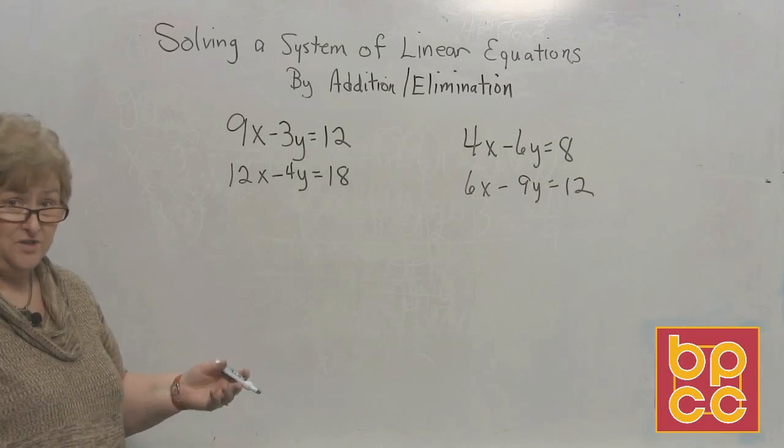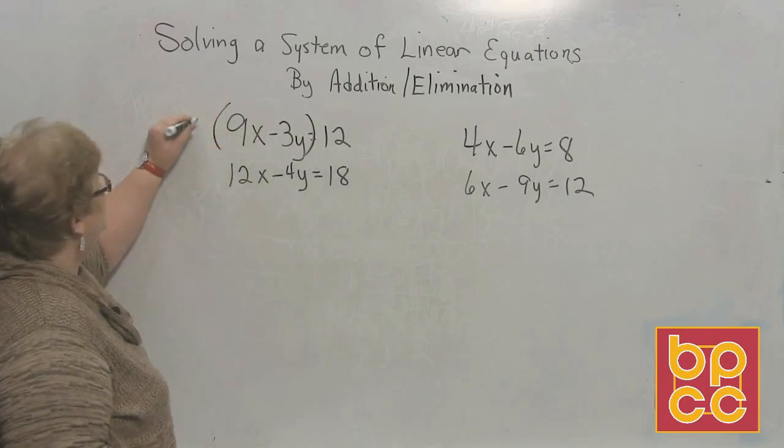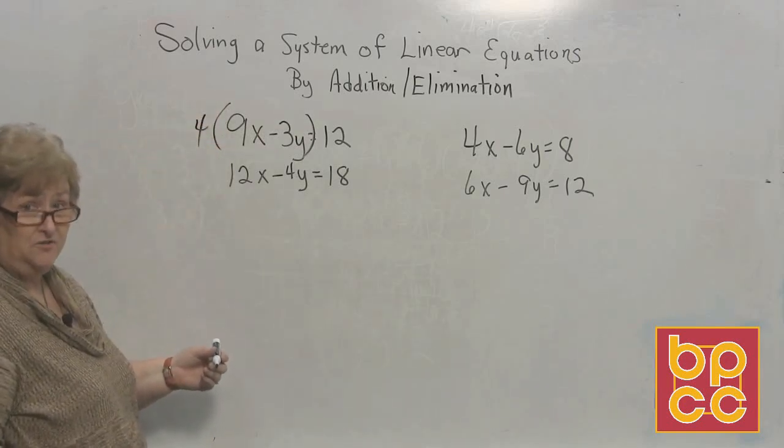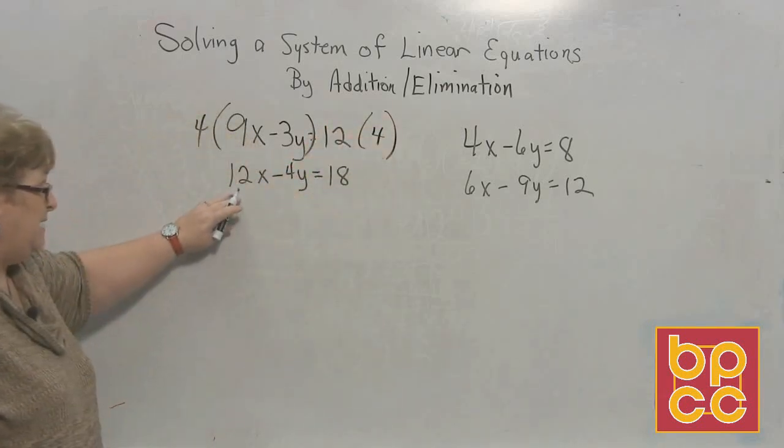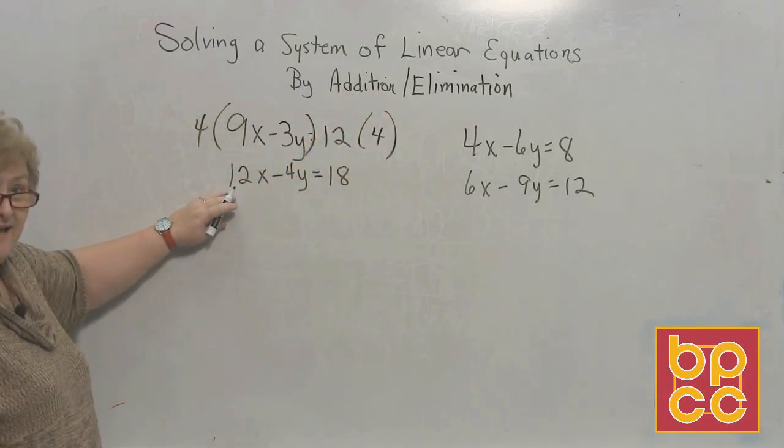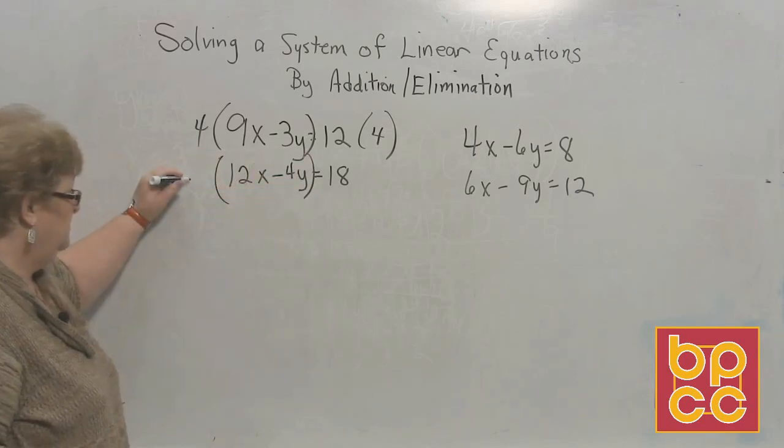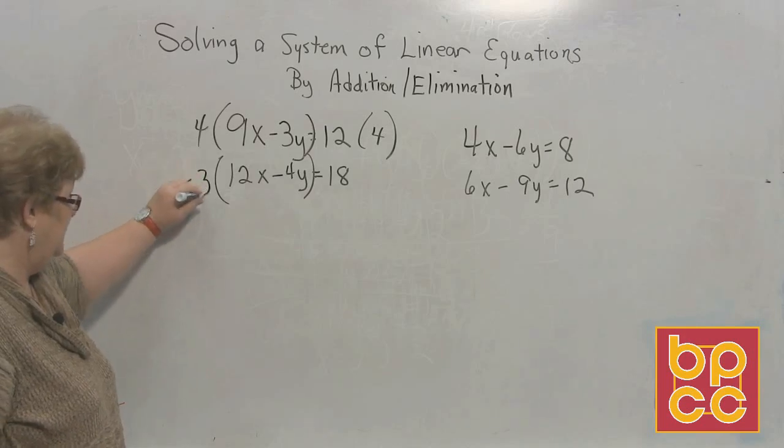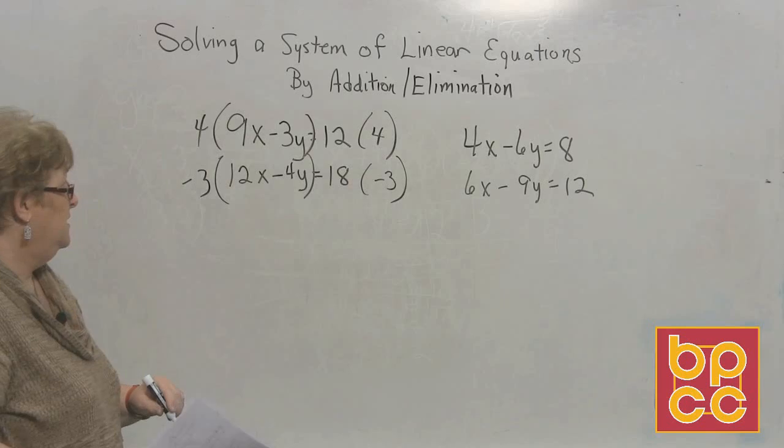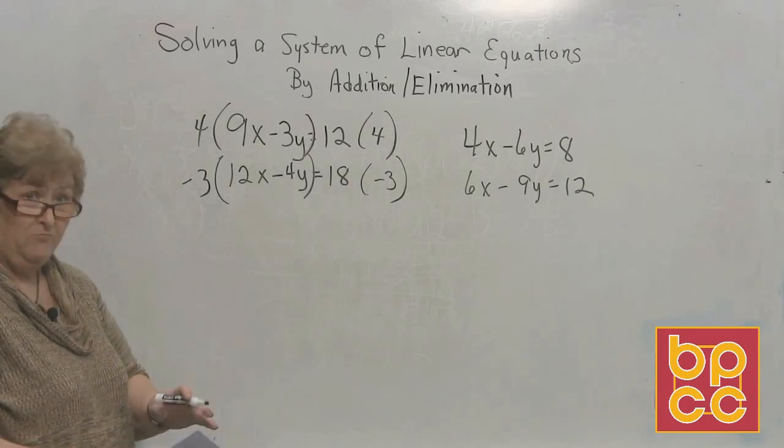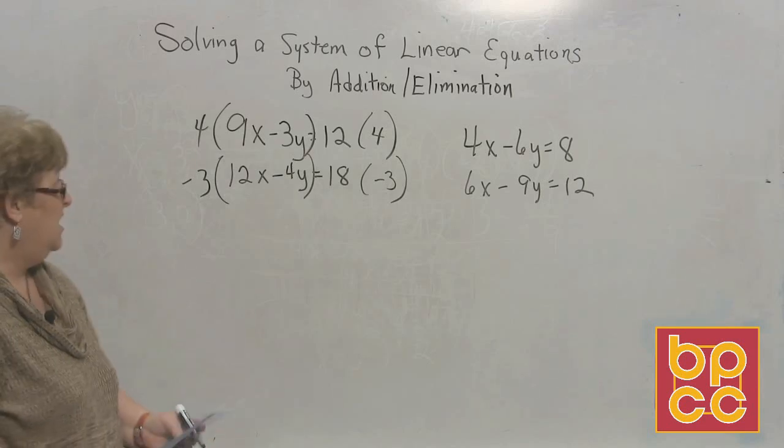So I'm going to have to do both of these equations and force a positive and a negative 36 on both the top and the bottom so I can solve this. Let this one be 4 and that will create a positive 36. What you do on one side, you have to do on the other. Now what can I multiply this 12x by to get it to be a negative 36? How about a negative 3? Negative 3 on both sides.